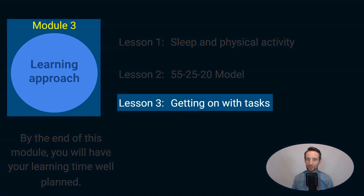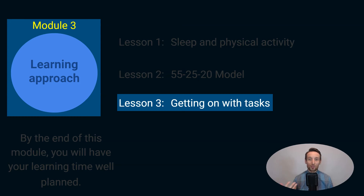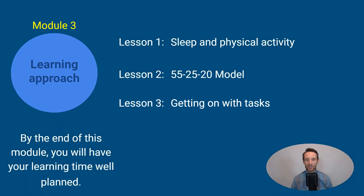Lesson three is about getting on with tasks. You will learn a simple method that will allow you to approach even the most inconvenient tasks with peace and maybe even joy. It's about bringing more presence and thus quality to your actions. By the end of this module you will have your learning time well planned and should already be making progress at a much faster rate.